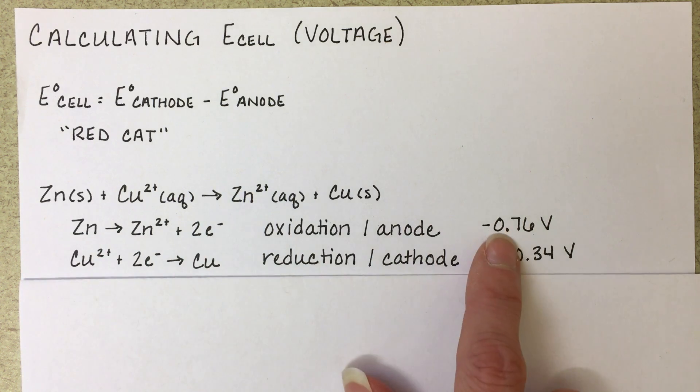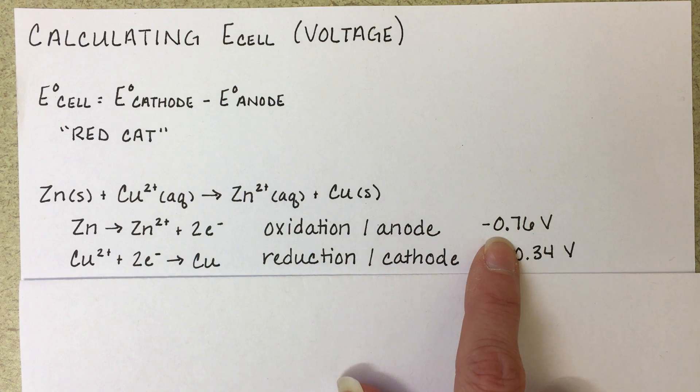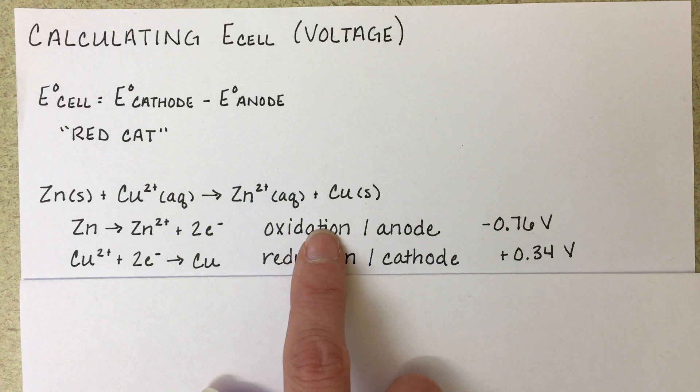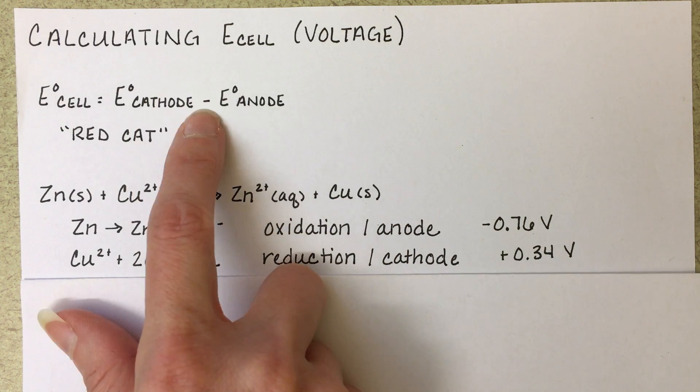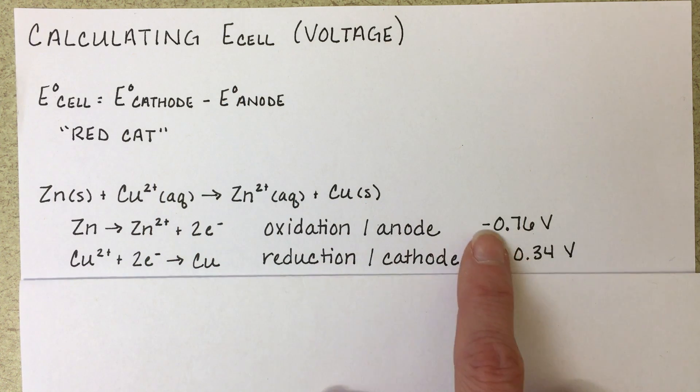The potential for that is negative 0.76 volts. And we're going to take that voltage, even though the zinc reaction is actually occurring as an oxidation, not as a reduction.